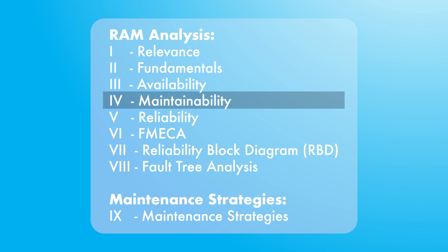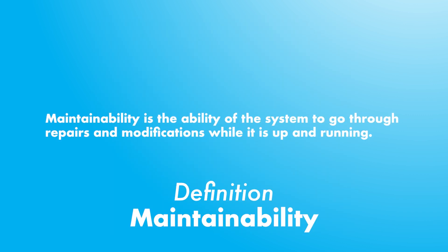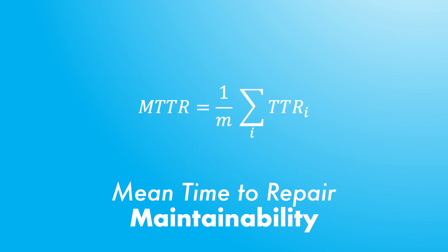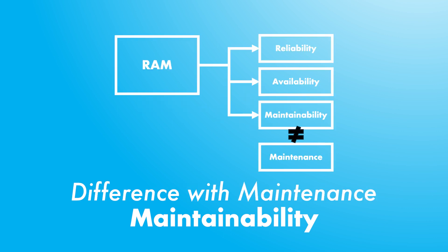Let us continue and discover more about the maintainability dimension. Maintainability is the ease by which a system can be restored to its functional status after a failure, and this analysis only applies to repairable systems. For repairable systems, the random variable of interest is the time to repair — the time spent in the state of failure (SOFA). We often also measure the metric of mean time to repair (MTTR).